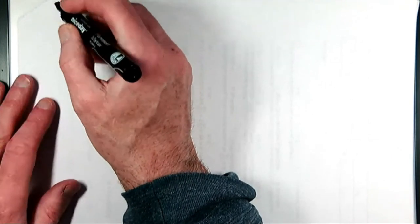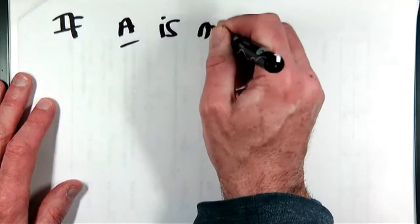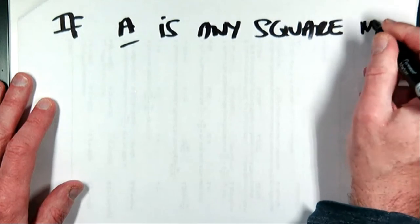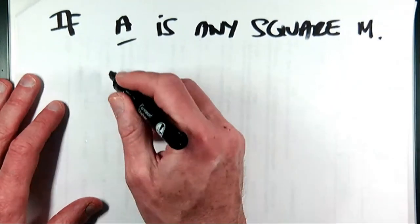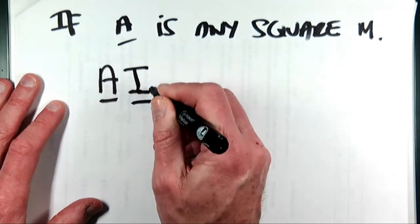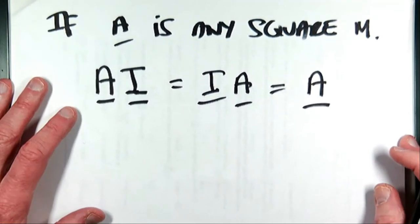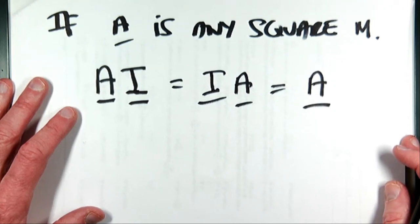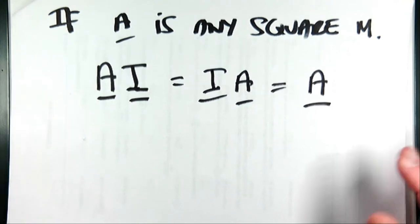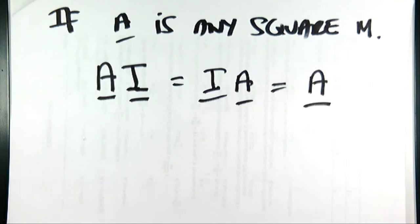One very important property of the identity matrix: if A is any square matrix, then A×I = I×A = A. So if you multiply any square matrix by the corresponding identity matrix, you just get back the square matrix. That's an important little idea — multiply a square matrix by its corresponding identity and you get back the square matrix.